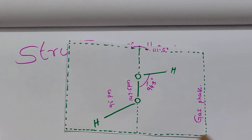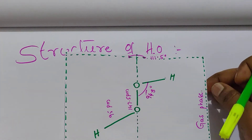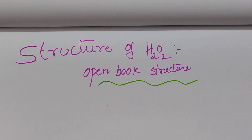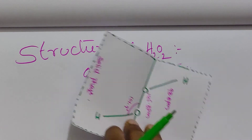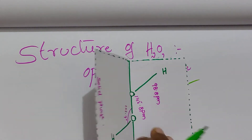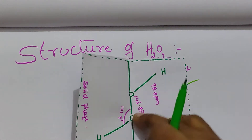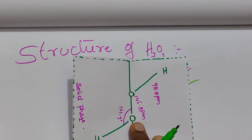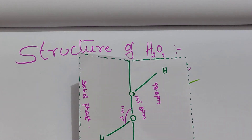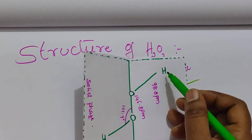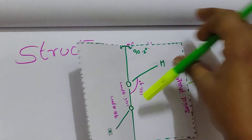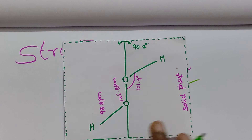This is the structure of hydrogen peroxide in the gas phase. Now, the structure of hydrogen peroxide in the solid phase is also an open book structure. The middle portion occupies the O-O link, which is called the peroxy linkage. If any compound contains an O-O bond, that bond is called a peroxy link. These oxygens are attached to hydrogen.